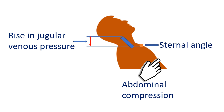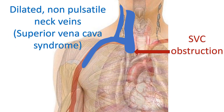In cases without visible elevation of JVP, sustained pressure over the upper abdomen for 30 seconds may be given to elicit the abdominal jugular or hepatojugular reflux. While examining engorged jugulars, it is important to check whether they are pulsatile or non-pulsatile. Non-pulsatile engorged jugulars suggest superior vena caval obstruction — superior vena caval syndrome.